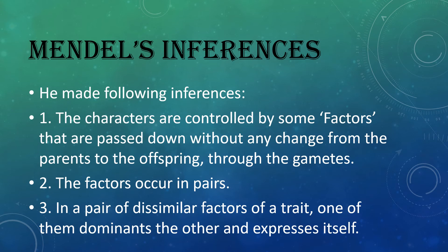After the findings, there were inferences. He said that characters are controlled by some factors — nowadays we use the term gene, but at that time gene was not used, so he used the term factor. He said factors are passed to the next generation, to the offspring, without any change, and they are passed on through the gametes. Factors always occur in pairs, and nowadays we say genes are always found in pairs.